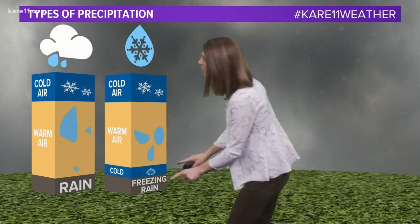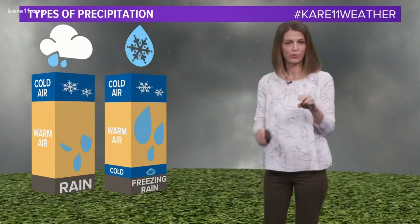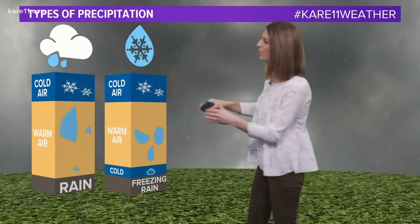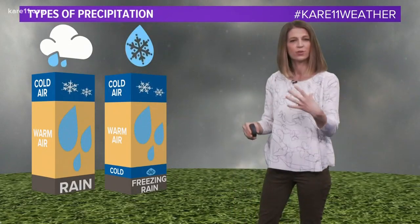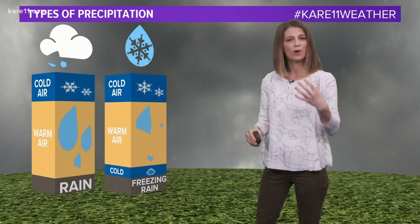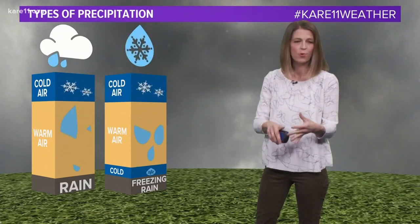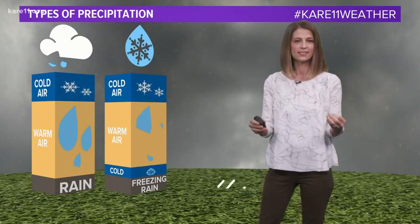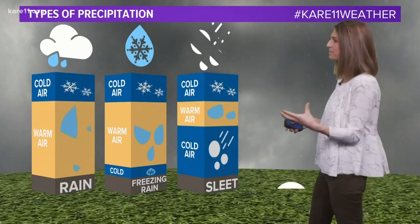When we get freezing rain, there's a thin layer of cold air below 32 degrees right near the surface. So even though through most of the atmosphere that rain is falling as liquid, as it makes contact with the ground or anything on the ground — our houses, fence poles, roadways — it freezes on contact because it's below 32 degrees.